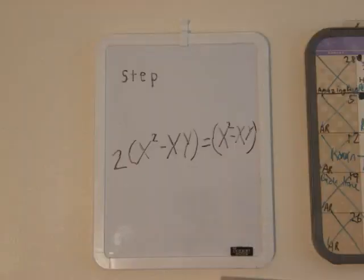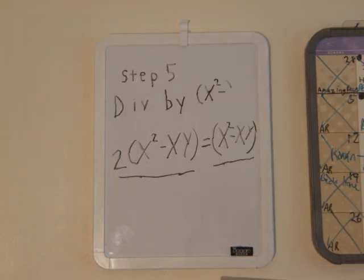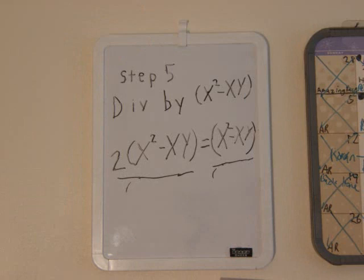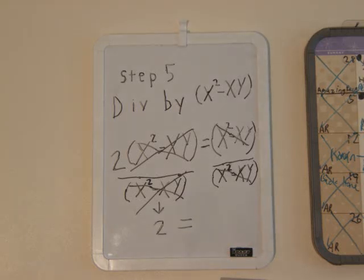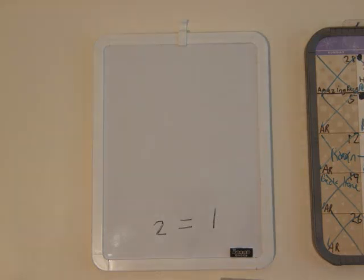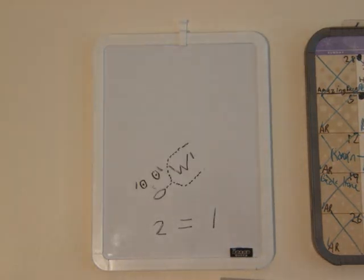Step 5 is the final step — it's where we need to divide. We are actually going to divide by the entire term x squared minus xy. On the left side, they cross out and we're left with a 2. On the right side, when it crosses out, we're just left with a 1. Wait a minute — so what are we left with? 2 equals 1? Are you kidding me?